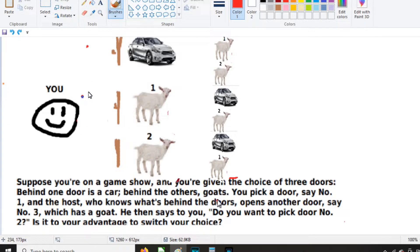You could originally pick the car, you have one-third chance of that. You're just randomly picking a door. You have a one-third chance of picking goat number one, and a one-third chance of picking goat number two.